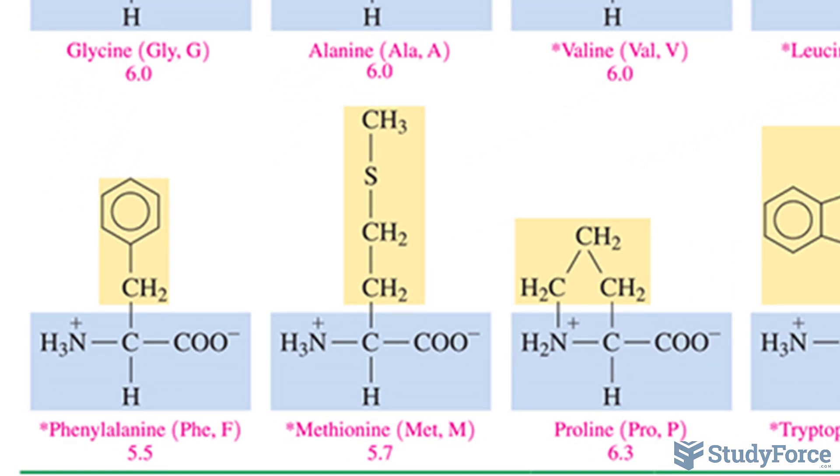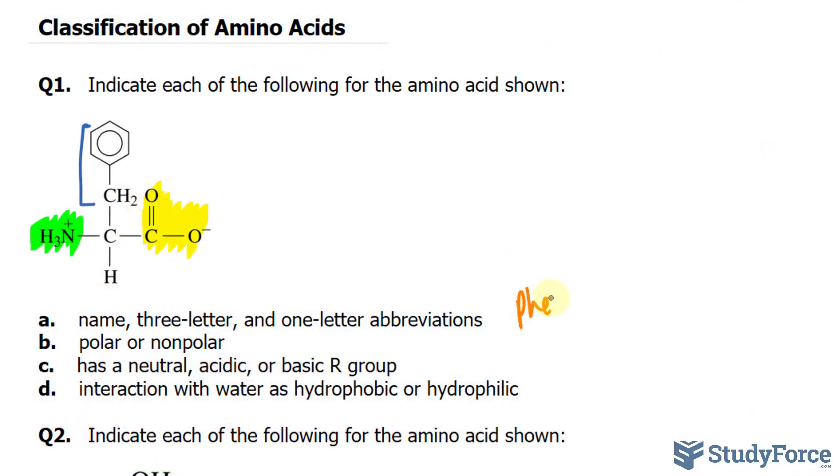Phenylalanine has the three-letter short form PHE and the one-letter abbreviation F. So let's write that down: phenylalanine, PHE, and F.